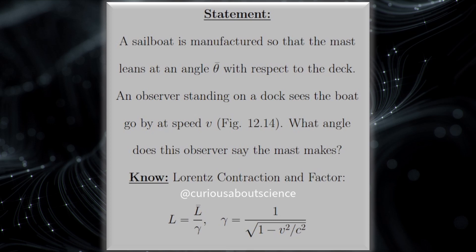What we need to know, of course, is the Lorentz contraction and the Lorentz factor. L is equal to L bar divided by gamma, and gamma is equal to 1 over square root of 1 minus v squared divided by c squared. Again, here the L bar is for the thing that's moving, and so now we'll see how this applies.